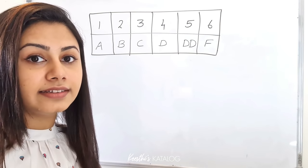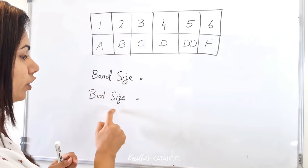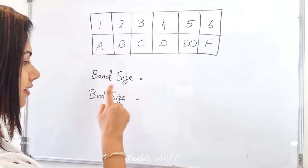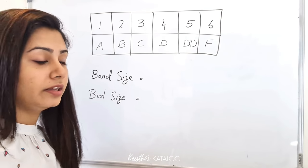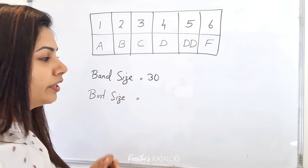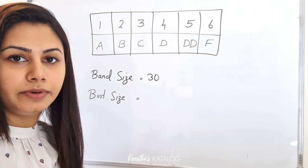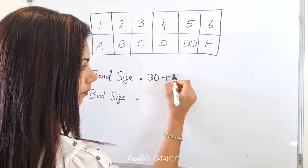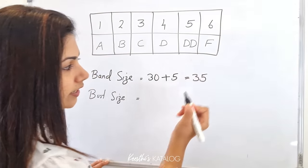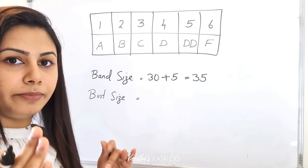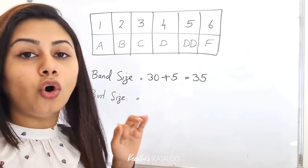Then we use the bra size for first measuring. We use the band size and the bust size. For example, we use 30 for band size. How about bust size? We use 5 added to get 35.